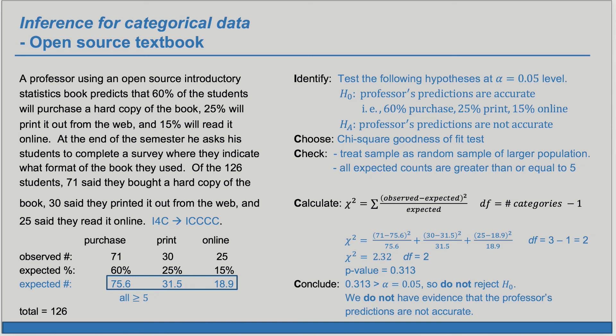Notice that this is not the same as saying that we have evidence for H sub O. We're not saying that we think that the percents are exactly 60 percent, 25 percent, 15 percent.